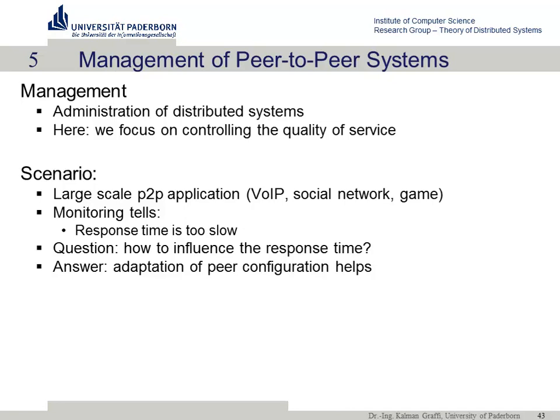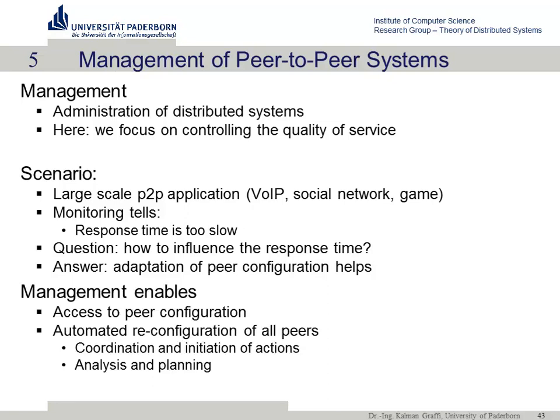The answer is that you reconfigure all 100,000 nodes in a systematic way. Management enables access to the peer configuration and automatically reconfigures all peers once a performance leak is detected. It coordinates all reconfiguration actions, analyzes the monitoring correctly, plans a correct and better configuration for the next step, and also executes this new configuration.